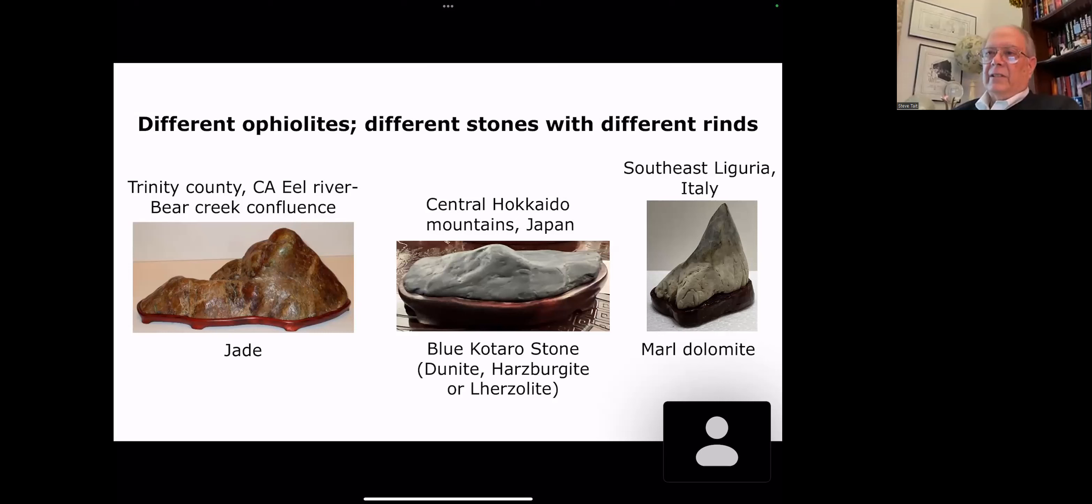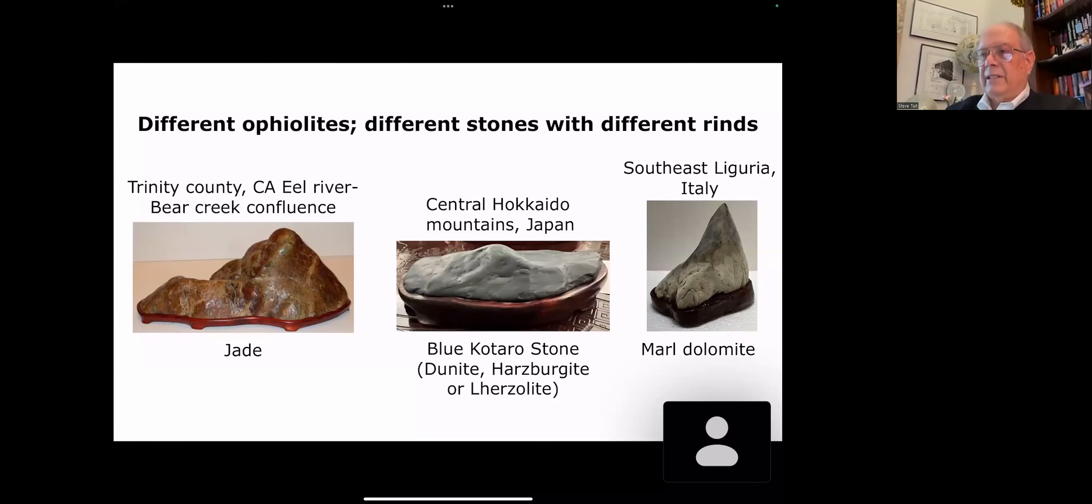Different ophiolites, different stones, different rinds. Here's an example of a jade viewing stone. It was found in Trinity County, California, the Eel River, Bear Creek confluence, where a lot of viewing stones come from. This is another one, it's a blue Kataro stone from central Hokkaido Mountains in Japan. Japan is just dotted with ophiolites. This particular one is actually part of the melange. Because of its blue color, blue-gray color, it's dunite, harzburgite, or lherzolite. And then you just saw this one, the marl dolomite from Southeast Liguria in Italy. Different ophiolites, different viewing stones, different rinds.